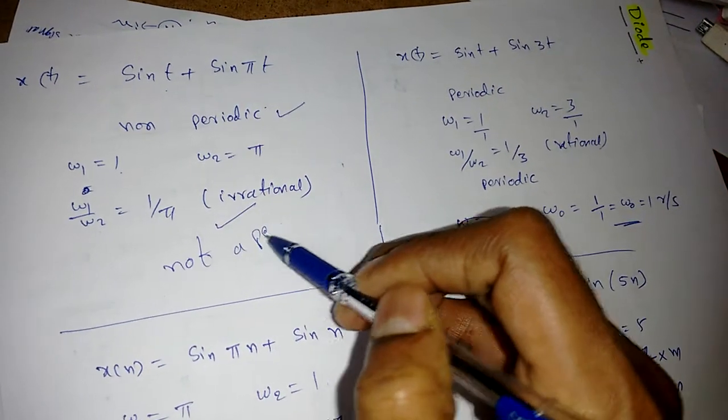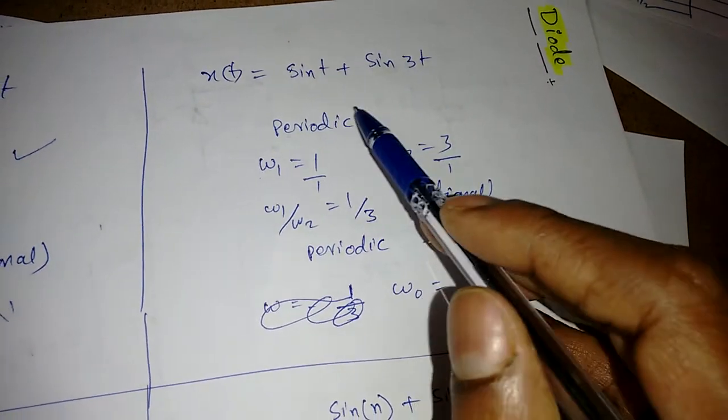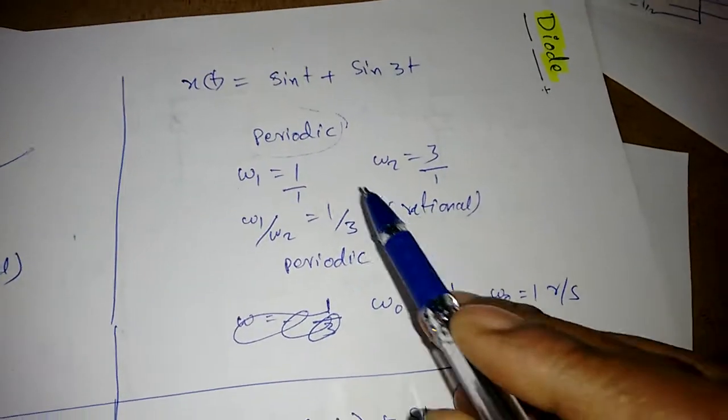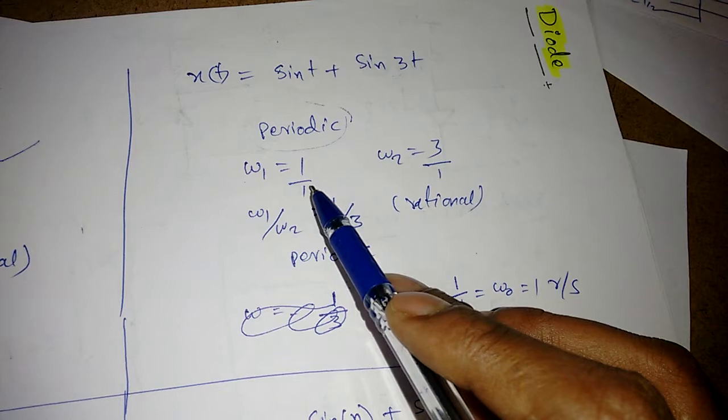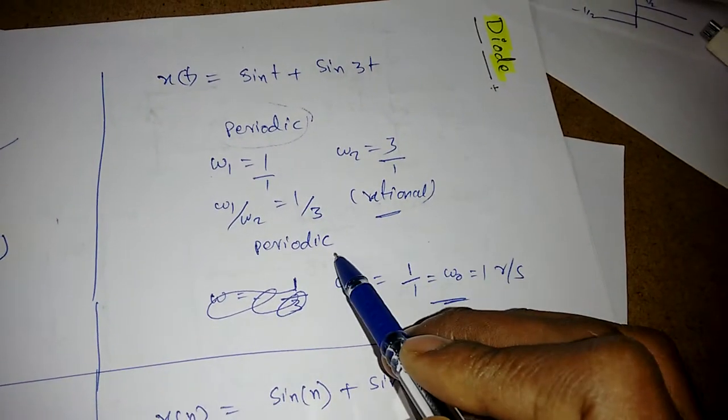Similarly if mentioned sin t plus sin 3 t, there is no pi term in this omega so we can say it is periodic. Now omega 1 is equal to 1, omega 2 is equal to 3. So omega 1 by omega 2 is a rational number so it is periodic.